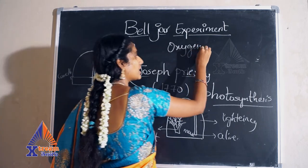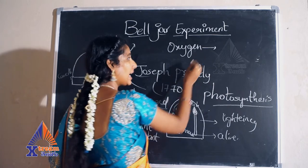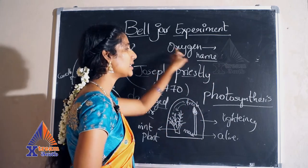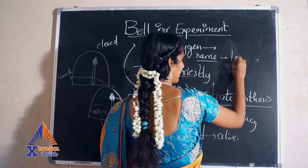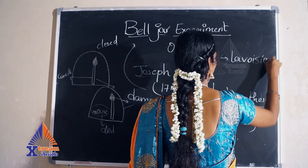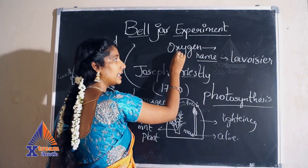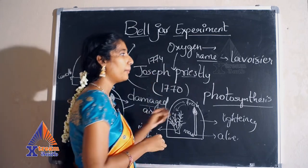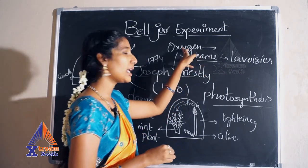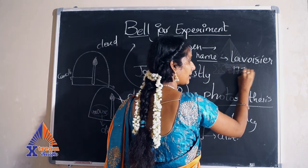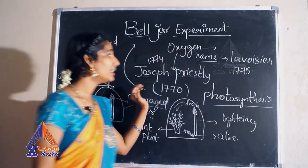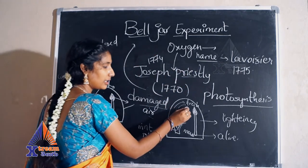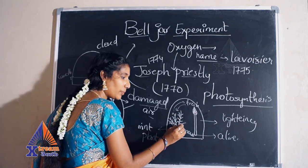This oxygen was discovered by Joseph Priestley. The name of oxygen was given by Lavoisier. The oxygen discovery was done by Joseph Priestley in 1774, but Lavoisier gave the name of oxygen. By this, Joseph Priestley discovered that the air present in the bell jar experiment is restored by the mint plant or any other plant, and light helps the candle to light again and the mouse to stay alive.